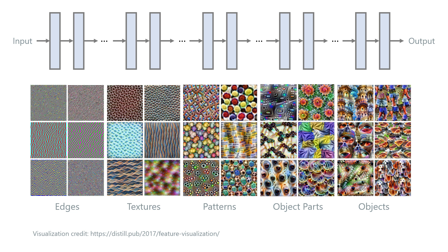One thing that makes deep learning interesting is that we don't tell the model what features to extract at every layer. All we need to do is to provide input and output pairs. Then the model figures out what kind of features would be useful to learn a mapping between these two. It's not always that simple, but it's still fascinating that deep models can learn hierarchical representations from data.